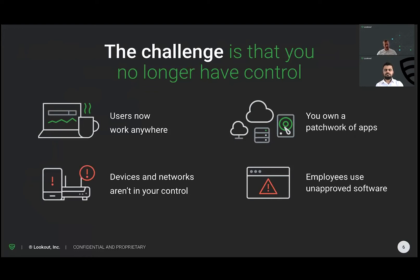Devices and networks aren't in your control. People are working from home — they're not on the network you created with a proxy and security controls. They're using personal Wi-Fi, tethering from mobile devices, whatever it might be. And lastly, employees are using unapproved software — things like WhatsApp or Telegram that leak data like contacts. When you first start WhatsApp, it asks for access to your contacts, and if the user says yes, those contacts are gone, leaked to the cloud.